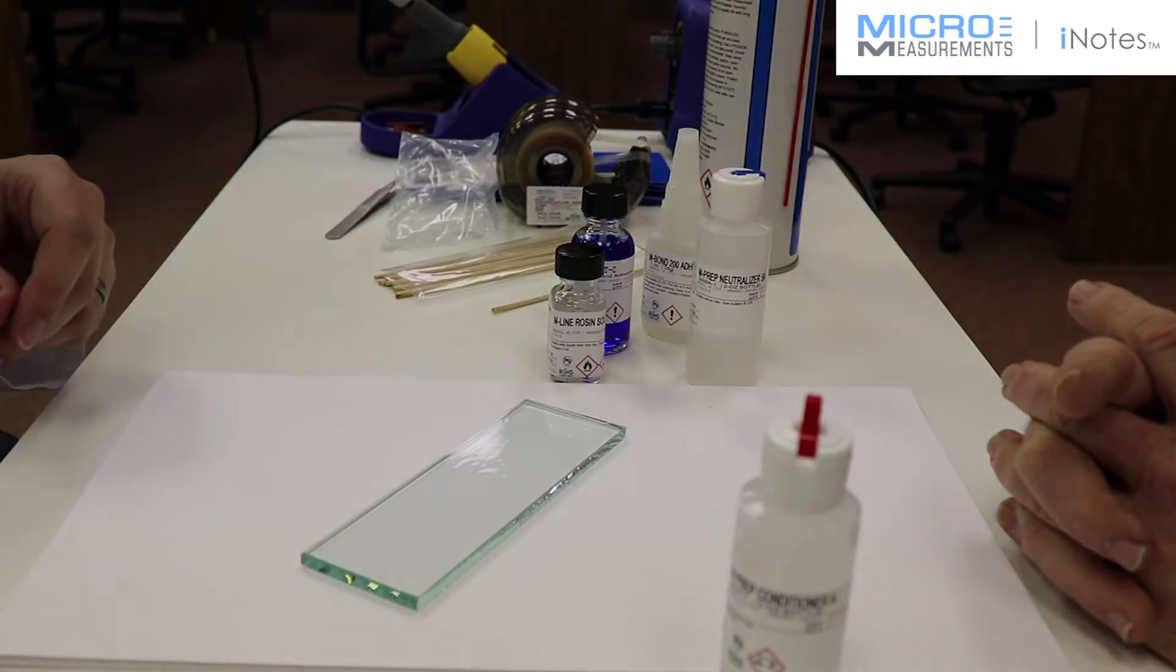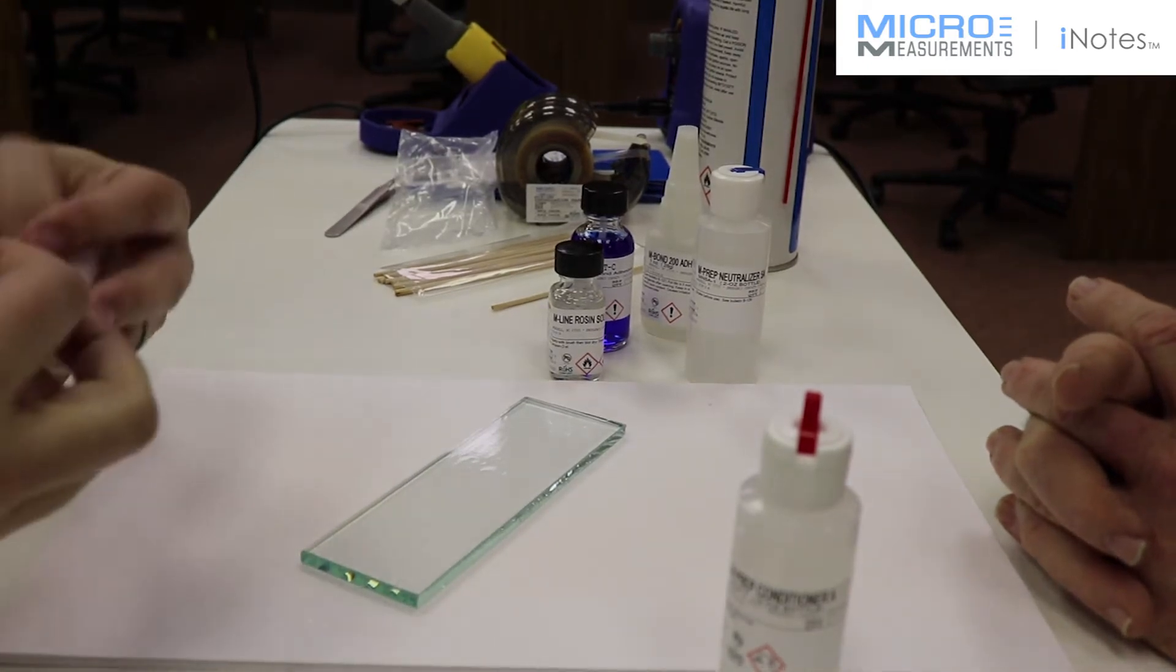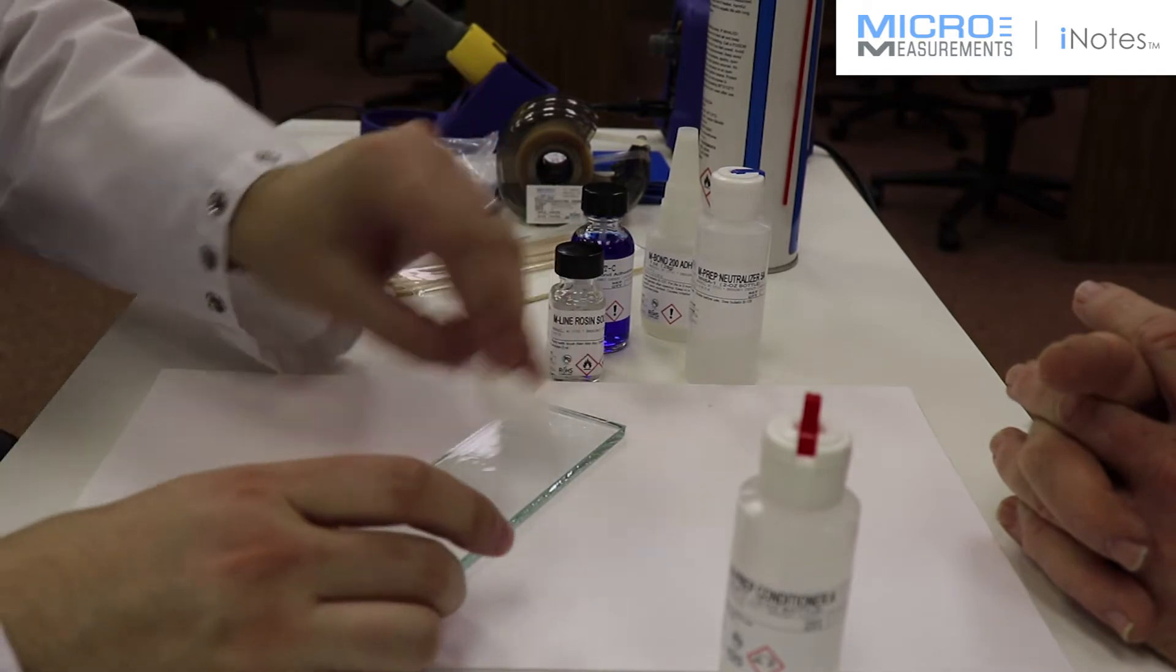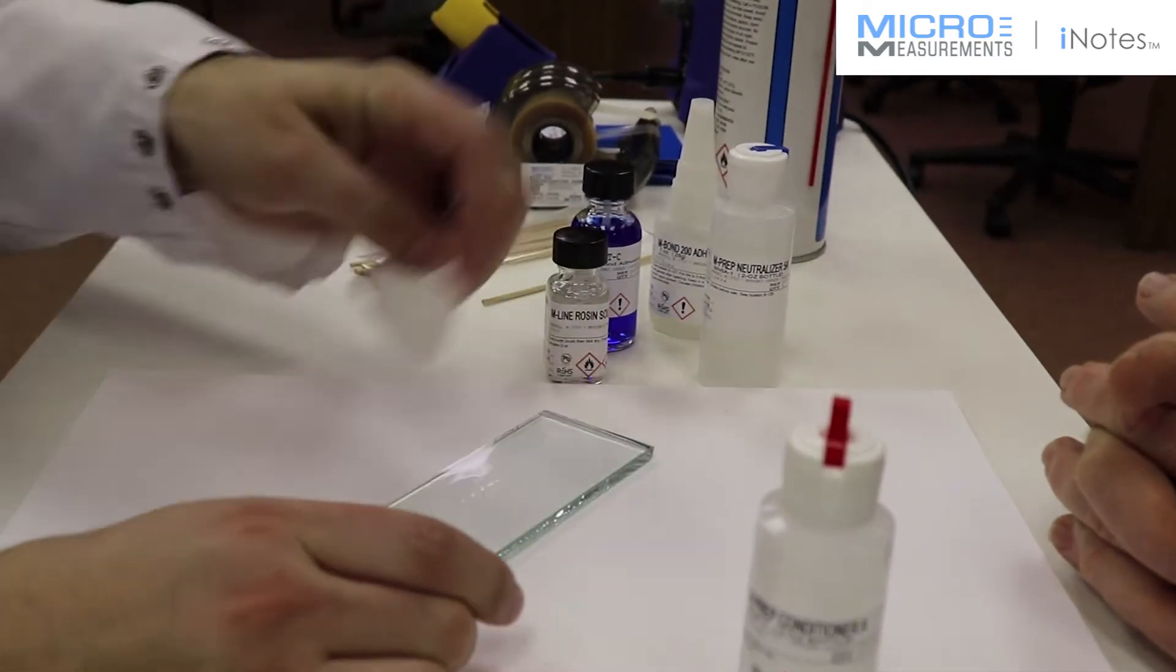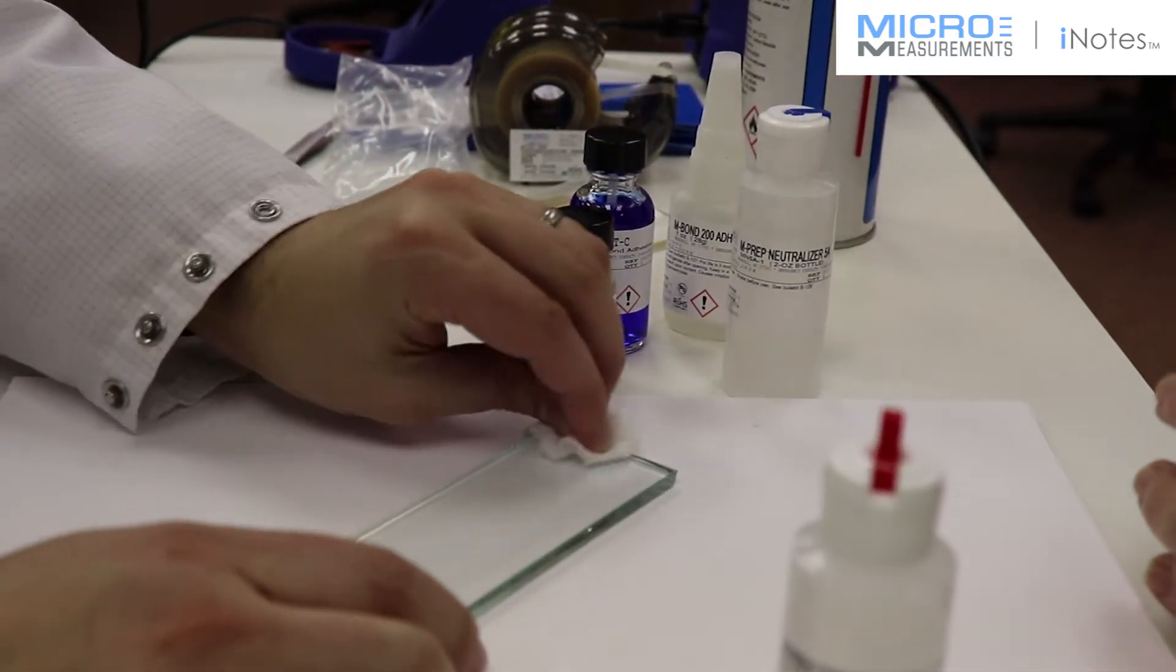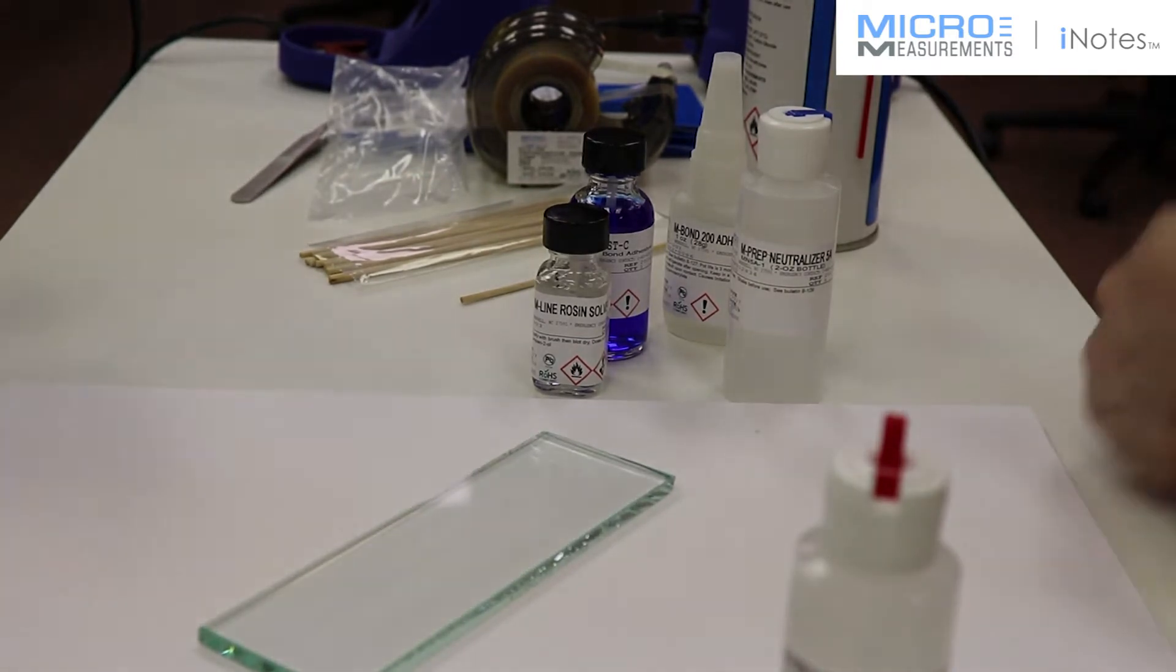Having finished that, he's going to take a clean dry gauze sponge and fold it into quarters, and he's going to dry that Conditioner A off there. We don't want to let it evaporate and stay on there, because it will leave debris behind.